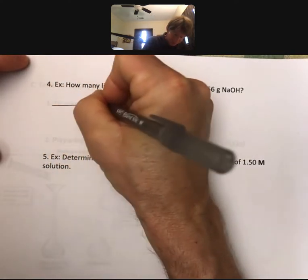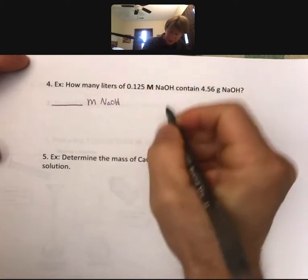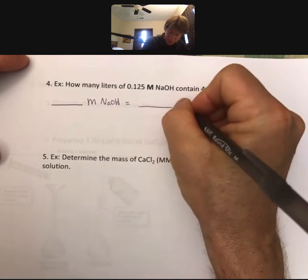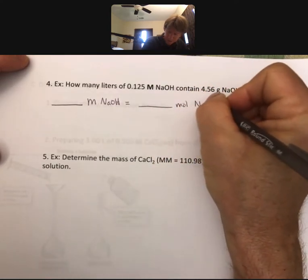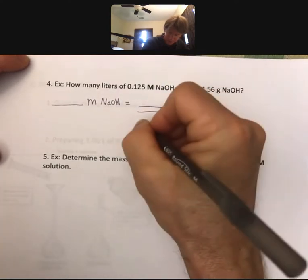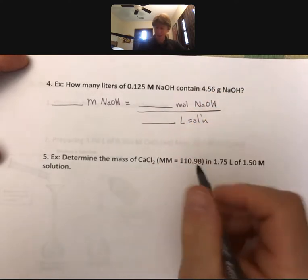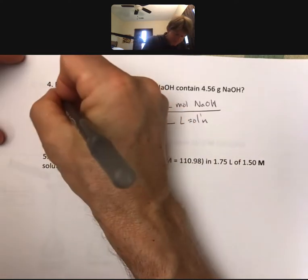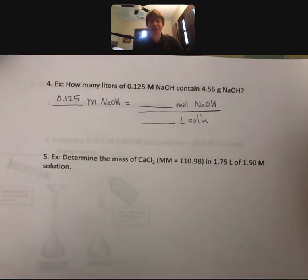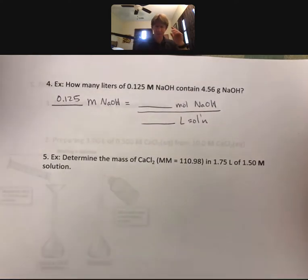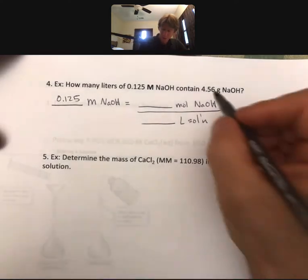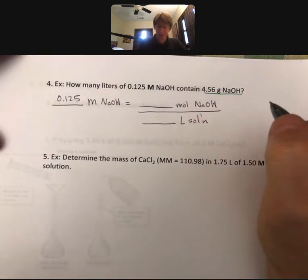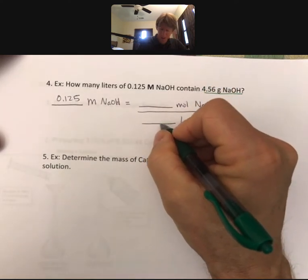So molarity of sodium hydroxide equals moles of sodium hydroxide over blank liters of solution. And this time we're going to have, we have our molarity so we can plug it right in. We know we have grams and we're going to convert grams into moles again, but this time we're going to be solving for our liters.